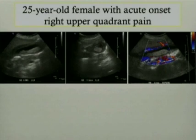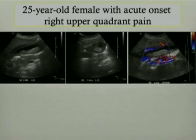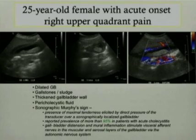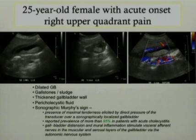This is the first case of a 25-year-old female who presented with acute onset right upper quadrant pain. The three sonographic pictures presented here demonstrate a very classical picture of acute cholecystitis. It demonstrates a distended gallbladder, some gallstones and gallsludge, a very thickened gallbladder wall, some pericholecystic fluid. What we are not able to demonstrate here but is extremely important in making the diagnosis of acute cholecystitis is that of sonographic Murphy's sign.